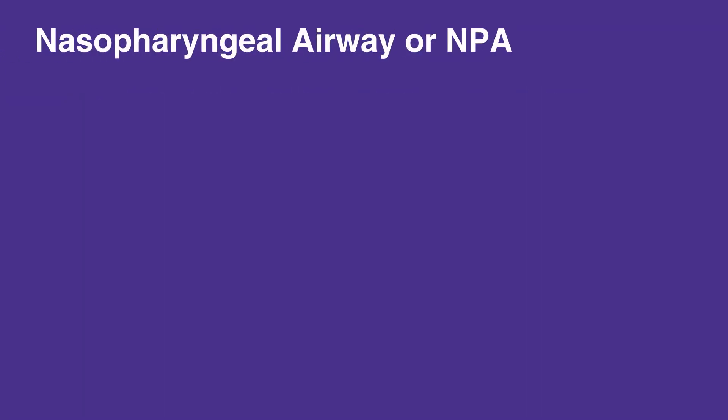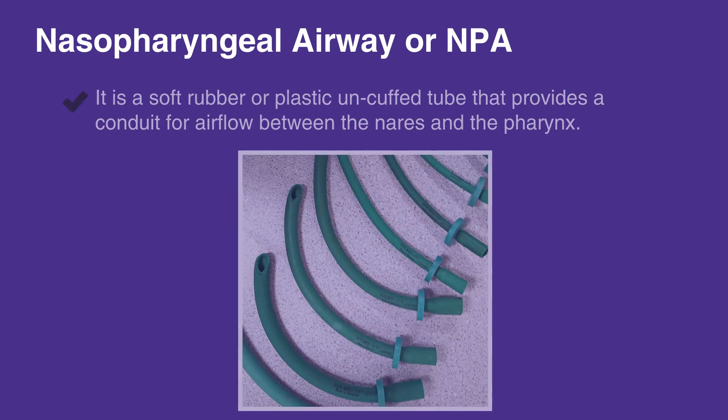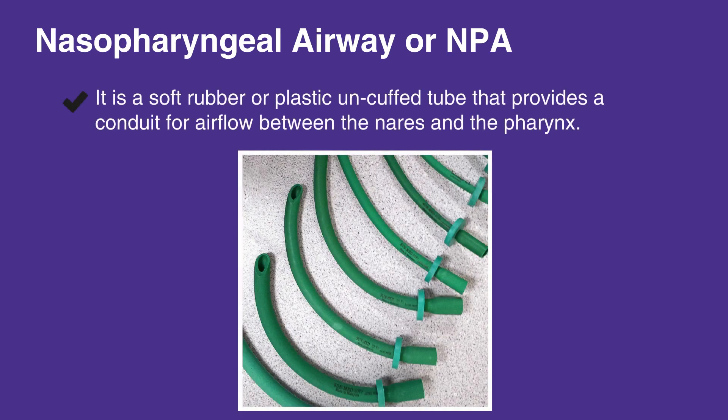The nasopharyngeal airway, or NPA, is a soft rubber or plastic uncuffed tube that provides a conduit for airflow between the nares and the pharynx.